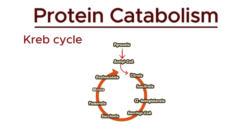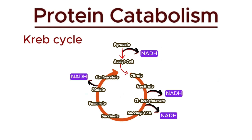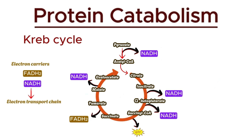Succinate is oxidized to fumarate, which is then hydrated to form malate. Finally, malate is oxidized to regenerate oxaloacetate, allowing the cycle to begin again. Throughout this process, the cycle produces three NADH molecules, one FADH2 molecule, and one GTP, which are critical for ATP production in the electron transport chain. These electron carriers then enter the electron transport chain and finally generate energy.